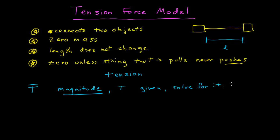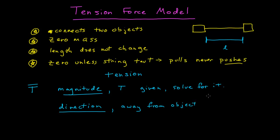There is no formula from first principles that gives you the magnitude of a tension. Someone's pulling on a rope with some force — you either have to know what the magnitude of that force is or you have to solve for it. The direction of the tension force is away from the object — backing up the fact that it pulls, it never pushes — and it is along the string at the point where the string is attached.